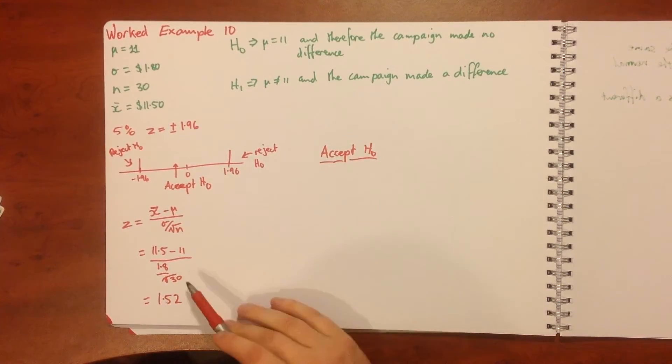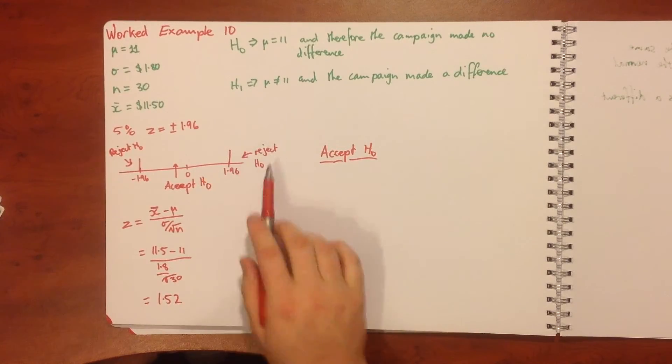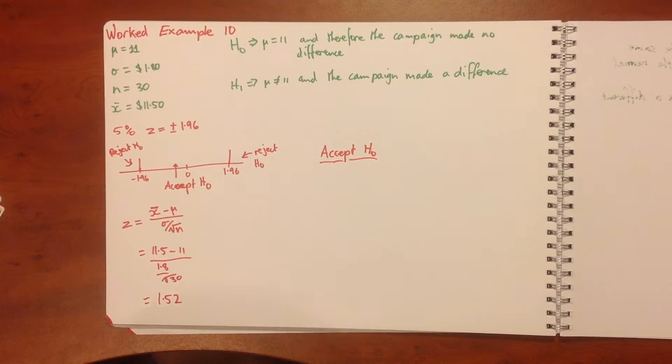We're going to accept H naught based on that. If we got a value of 2.1 then we would have been up here and we would have rejected it. But we need to accept it on this.